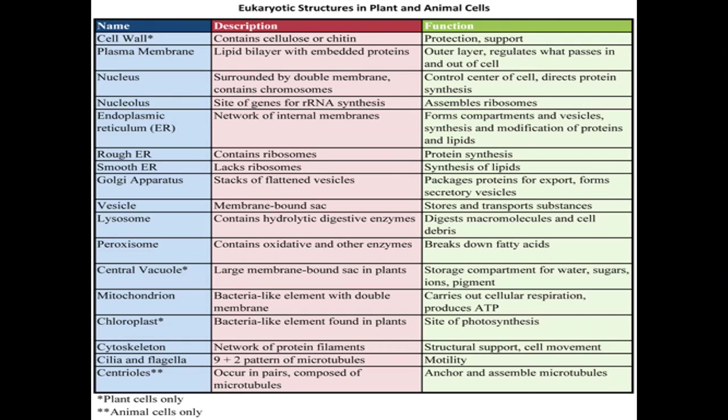The central vacuole's main function is as a storage compartment for water, sugars, ions, and pigments. Mitochondria are bacteria-like elements with a double membrane; they carry out cellular respiration and produce ATP — known as the powerhouse of the cell. Chloroplasts, only found in plants, are bacteria-like elements and are the main site of photosynthesis. The cytoskeleton is a network of protein filaments whose main function is structural support and cell movement.